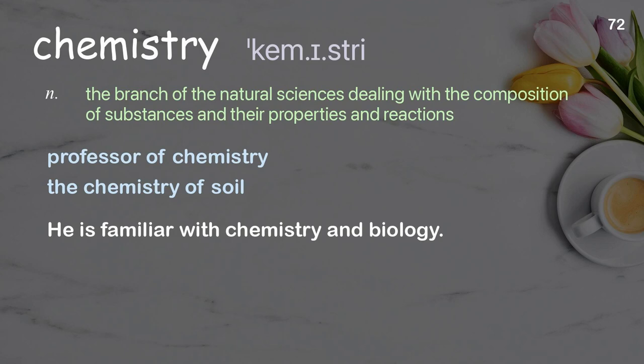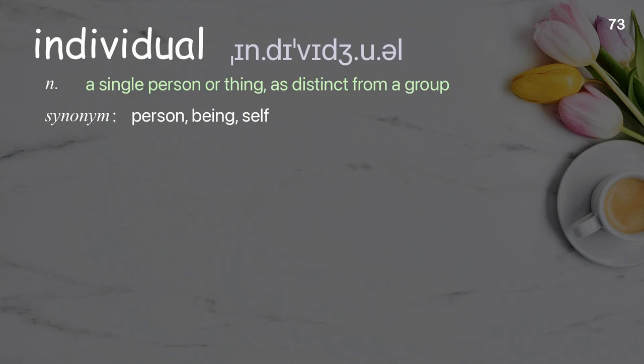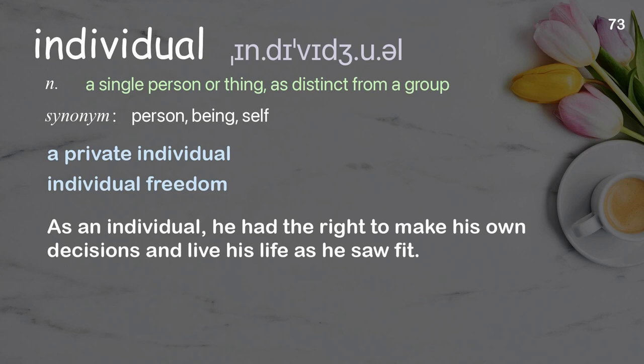Individual: a single person or thing as distinct from a group. Examples: individual freedom. As an individual, he had the right to make his own decisions and live his life as he saw fit.